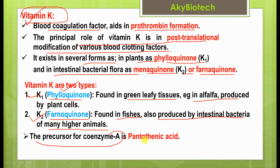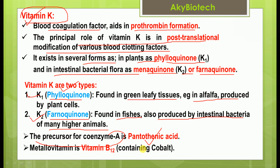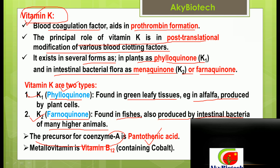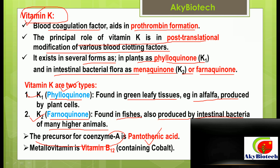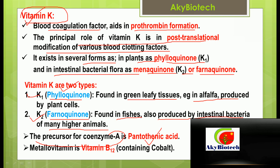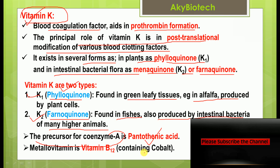The precursor for vitamin A is pantothenic acid. The metallo-vitamin is vitamin B12, which contains cobalt.